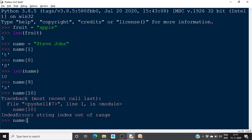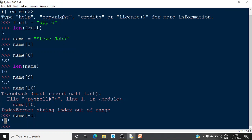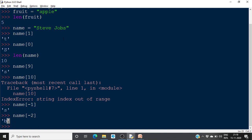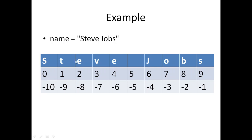There is another way to access characters using negative indices. If you give name[-1], it will return the last character 's'. name[-2] will return 'b', counting from the end. For 'Steve Jobs', which has 10 characters, you can access characters using either positive indices 0 through 9, or negative indices -10 through -1. The last element is name[-1].